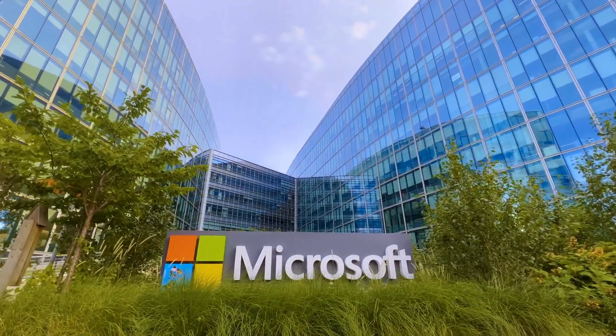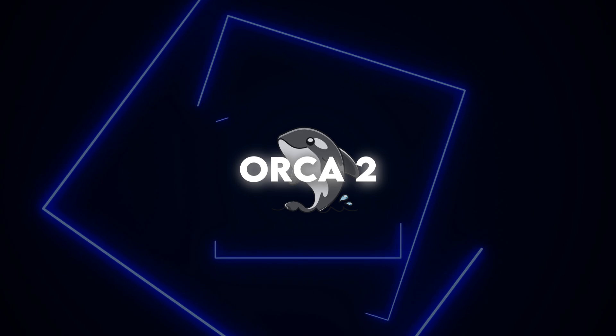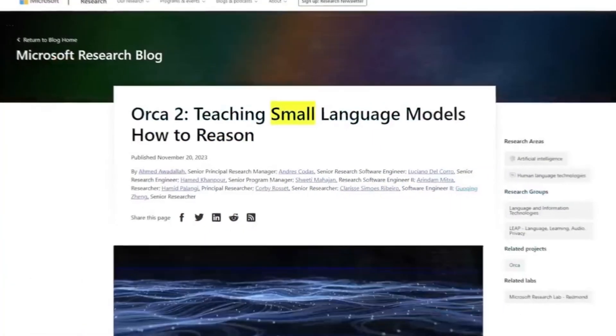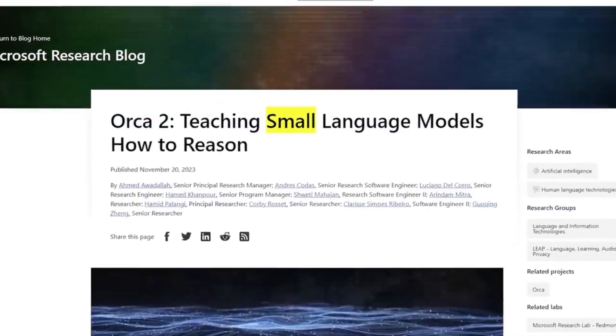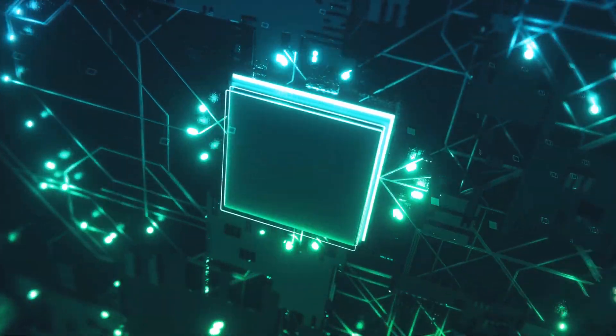Microsoft just released a lightweight AI language model called Orca 2, and it would surprise you to know that it outperforms many large models. Yes, a small model with only a few billion parameters, competing with, if not besting, big models with nearly a trillion parameters.